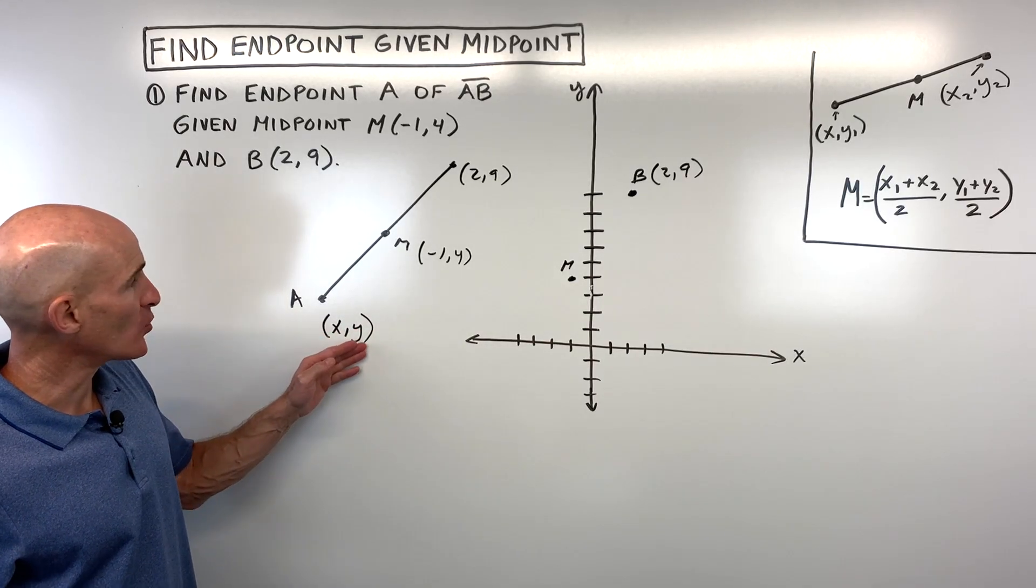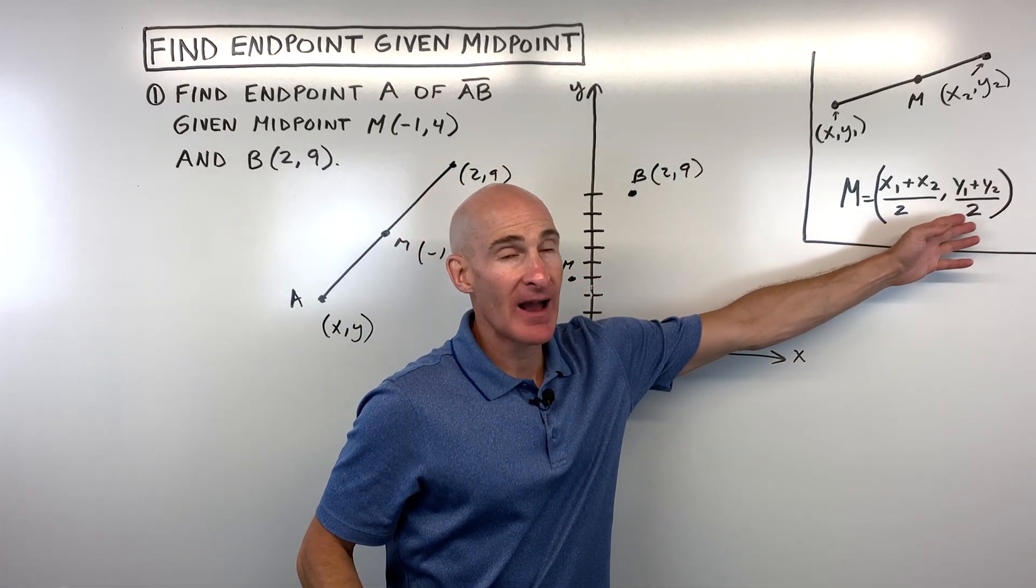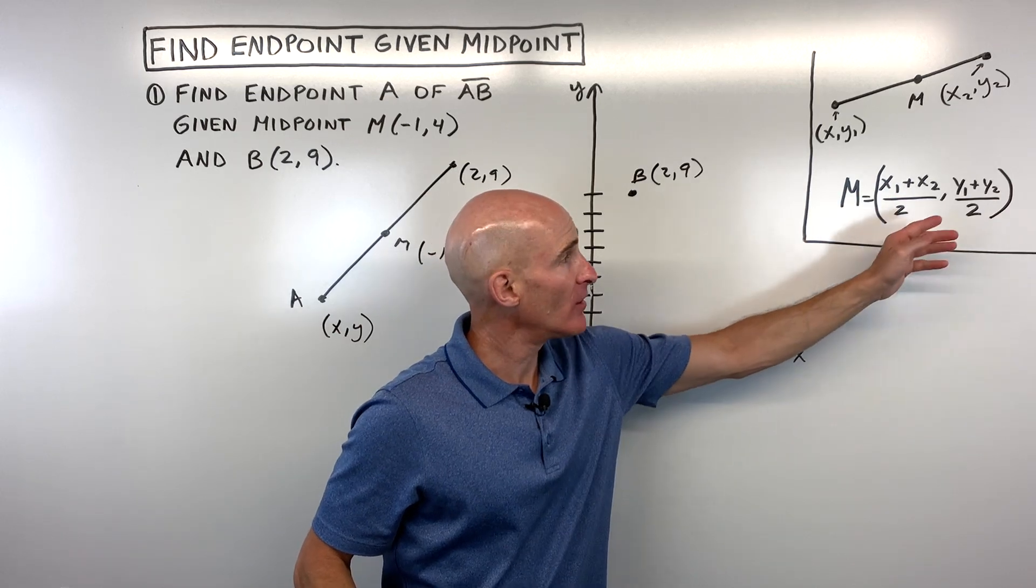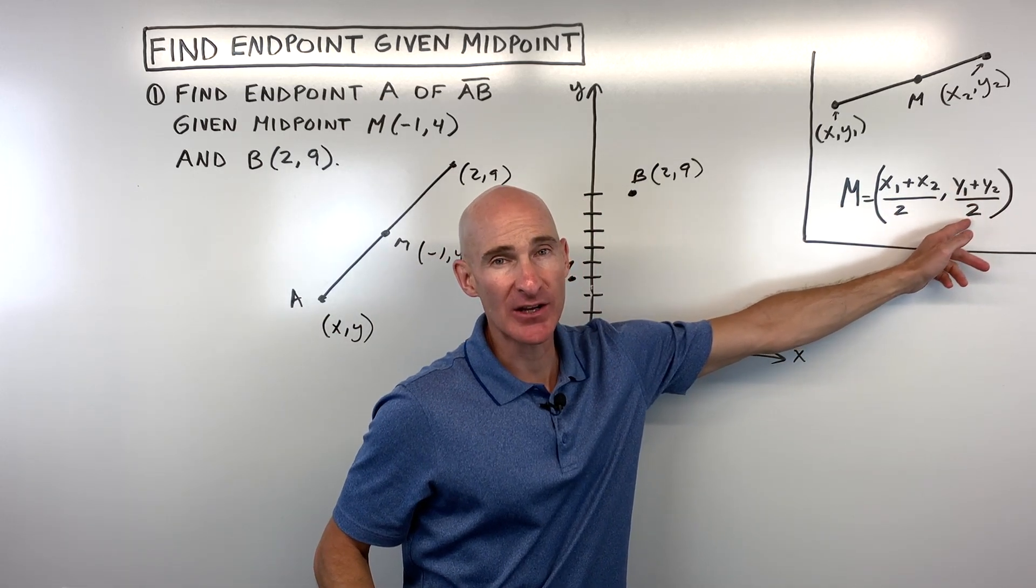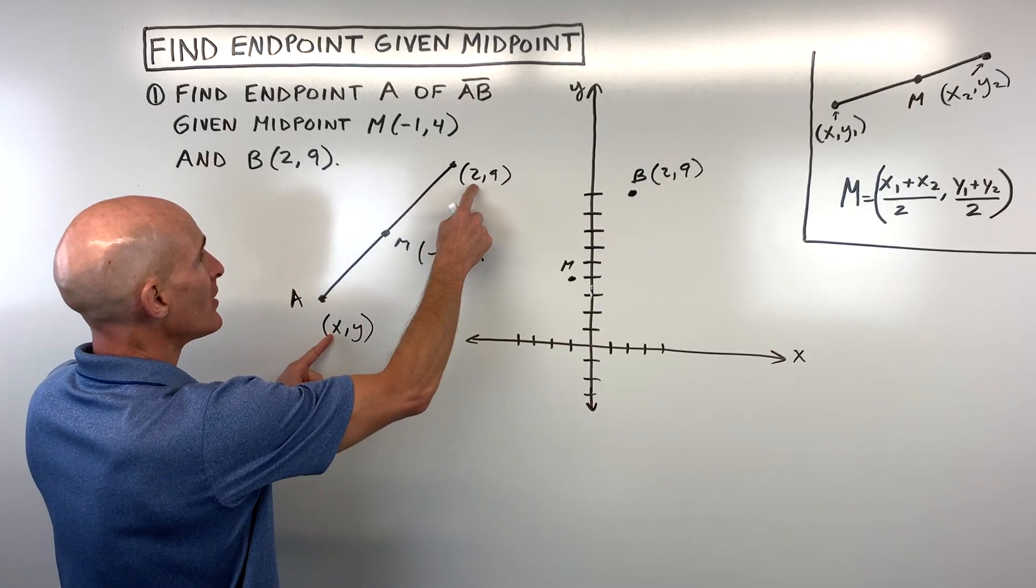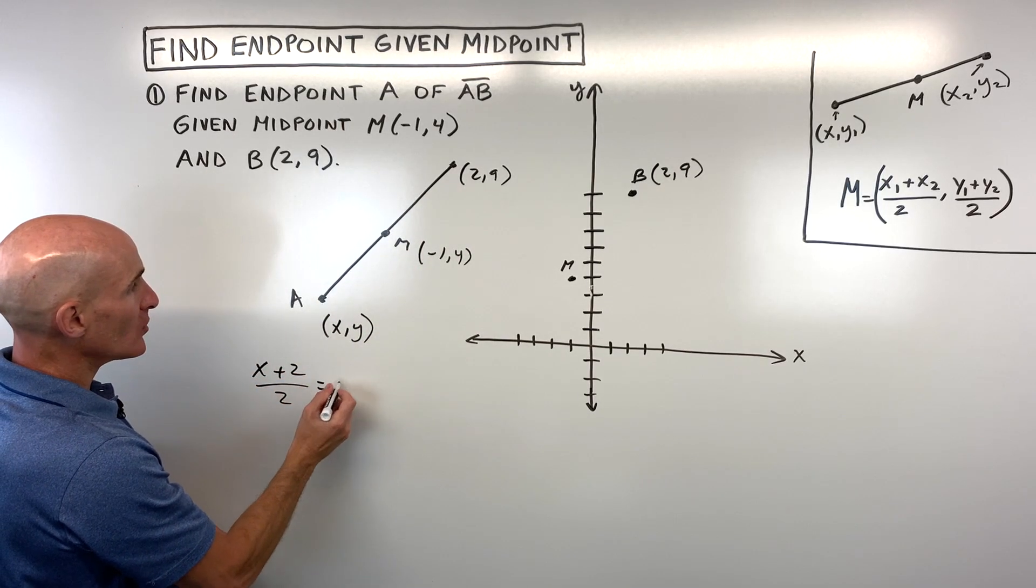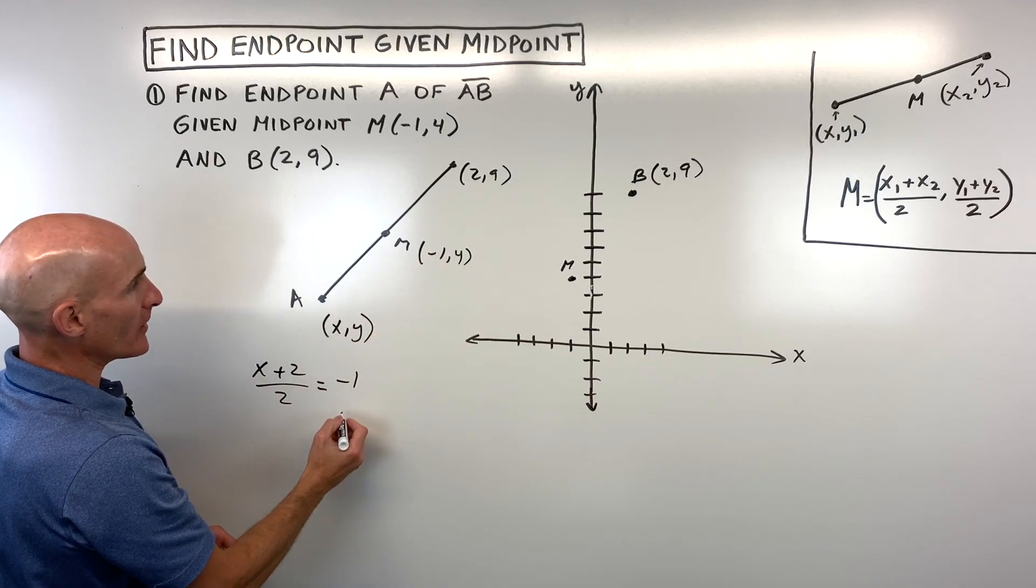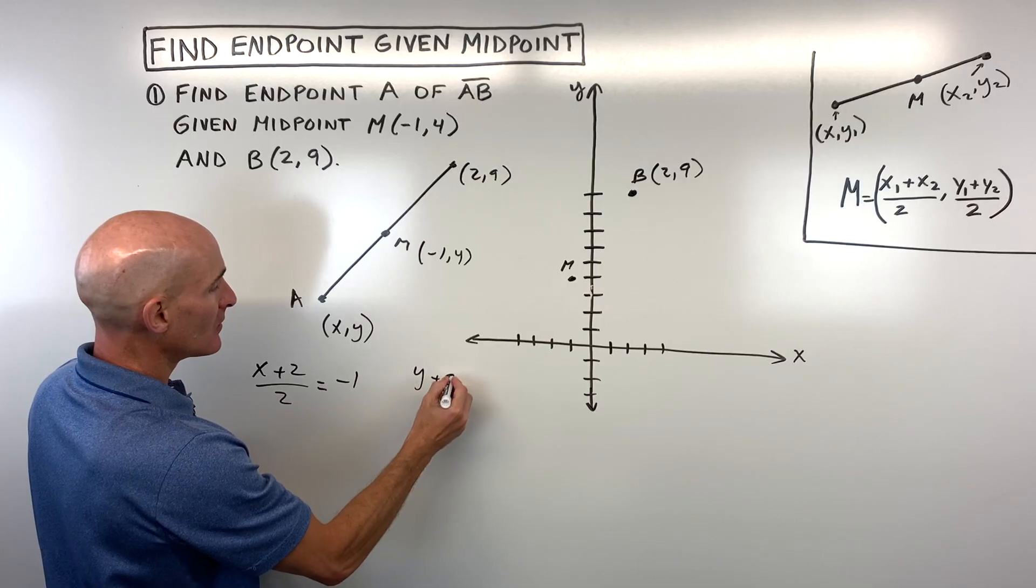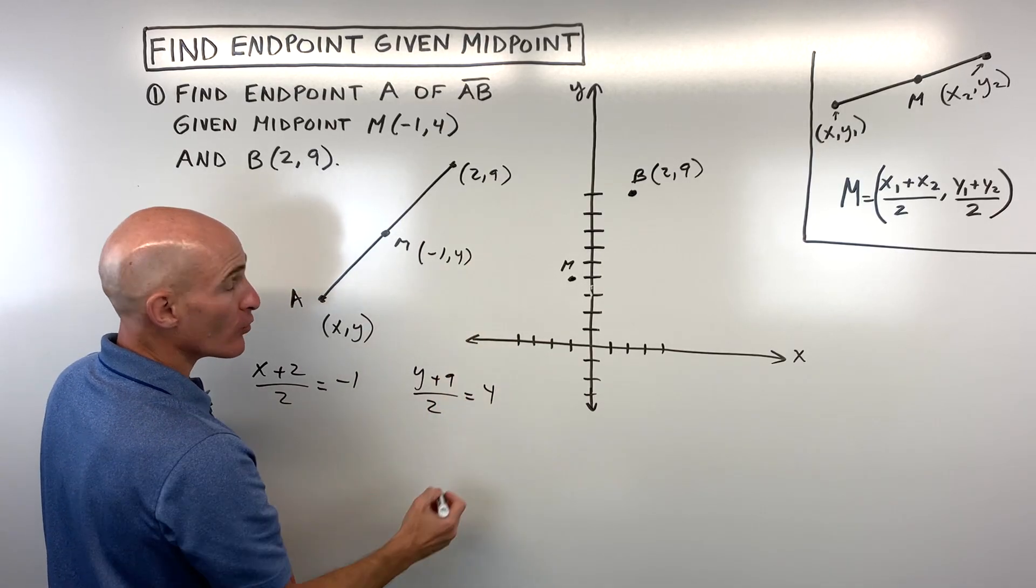Now when you find the midpoint, it's like finding an average. You add the X coordinates and divide by two, that's how you find the middle. And then you add the Y coordinates and divide by two, just like an average. So what we're going to do is we're going to say X plus two divided by two equals the X coordinate of the midpoint. And we're going to do the same thing for the Ys. Y plus nine divided by two equals the Y coordinate of the midpoint.